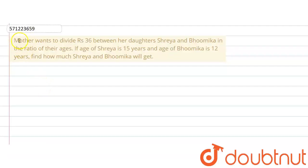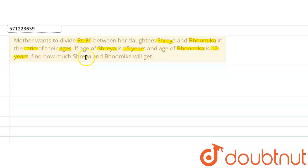The given question says that a mother wants to divide rupees 36 between her daughters Shreya and Bhumika in the ratio of their ages. If the age of Shreya is 15 years and the age of Bhumika is 12 years, then find how much Shreya and Bhumika will get. So we are given that some amount of money is to be divided between the two daughters in the ratio of their ages.